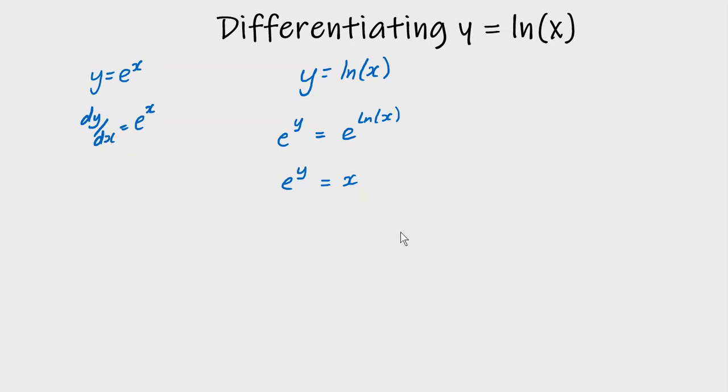Now we've already seen that y equals e to the x differentiates to be dy/dx equals e to the x. And there's nothing special about x and y that means they can't be the other way around, so if we do dx/dy here, we swap our x's and y's round and do our differentiation with respect to y, then dx/dy equals e to the y.